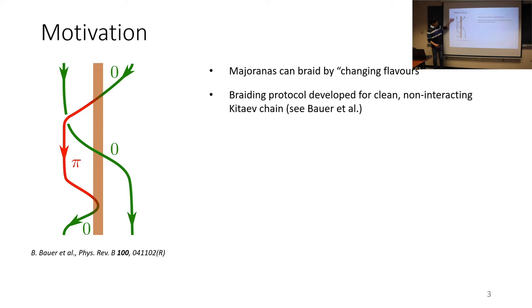So to elaborate on what we mean, here in this schematic we have essentially what is the braiding protocol, and time is downwards. So the strip in the middle is where the Majoranas can change flavor, where zero Majoranas can change to Pi and back.